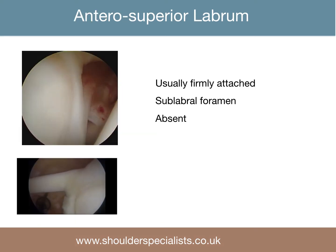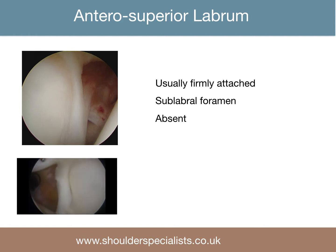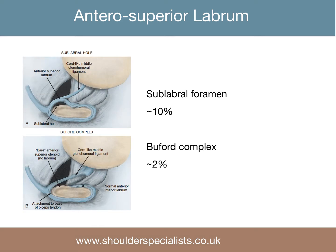The anterior superior labrum is usually firmly attached, but there may be a sublabral foramen, or the labrum may be absent altogether. A sublabral foramen occurs in about 10% of shoulders, and is often associated with a cord-like middle glenohumeral ligament which attaches to the free part of the labrum. When the labrum is absent altogether, a cord-like middle glenohumeral ligament may attach to the base of the biceps tendon, as in the Buford complex.